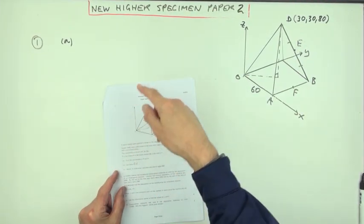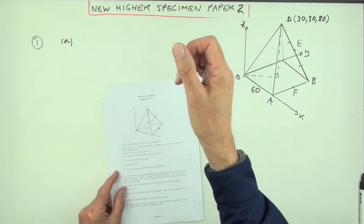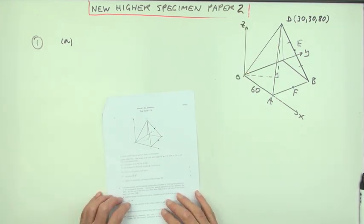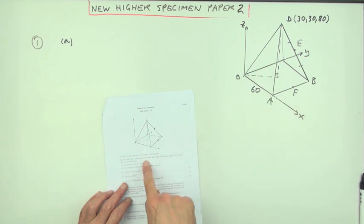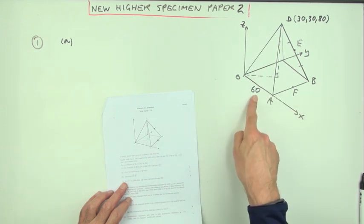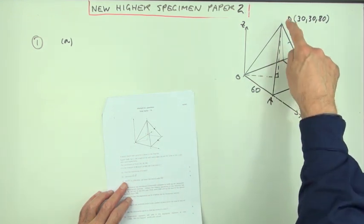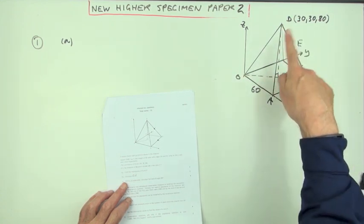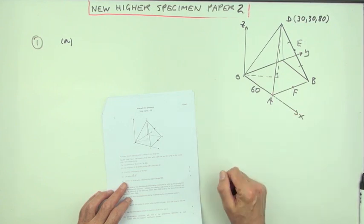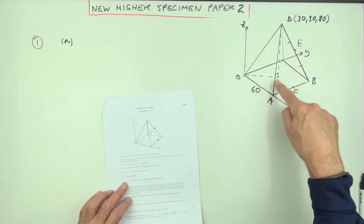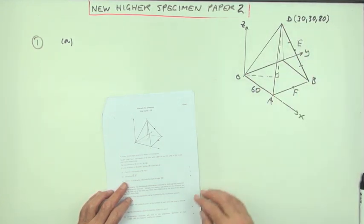So number one then, from the second paper of this new higher, and this is the specimen paper. There's a square-based pyramid, it says, of side 60 units. The coordinates of D, since it's a right square-based pyramid, meaning the top's directly above the centre of the base, so its coordinates will be 30-30, and it says it's 80 up.